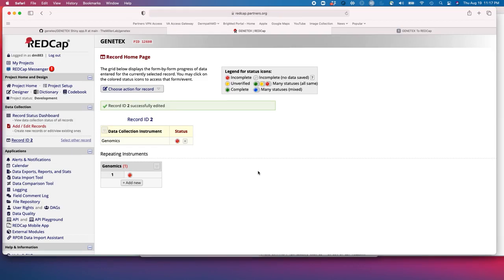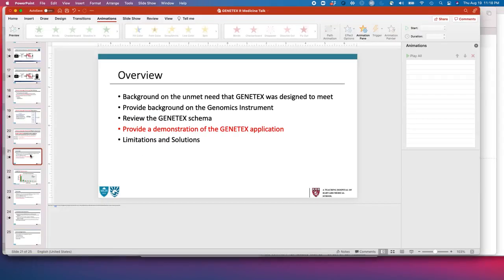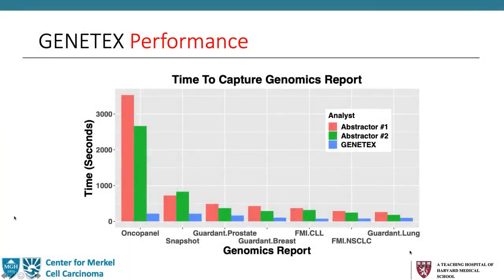It's important to note that we have the ability to capture text files and also PDFs, as many platforms use PDFs, and we want to capture from both. Now that we've seen the package, we want to comment on its integrity. We analyzed the time to capture and accuracy of the information. We had two data abstractors capture seven genomic reports and had the Genetix package capture those same seven. Genetix was much more efficient, and importantly, we found greater than 99% agreement between Genetix and abstractor one, and Genetix and abstractor two. So Genetix was fast and also quite accurate.